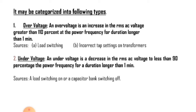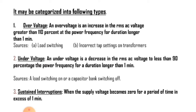Then coming to sustained interruptions. When the supply voltage becomes zero for a period of time in excess of one minute, this long duration voltage variation is considered a sustained interruption. Voltage interruptions longer than one minute are often permanent and require human intervention to repair the system for restoration.